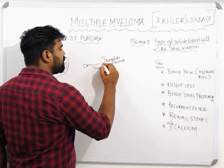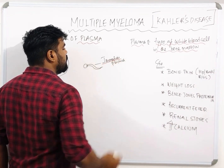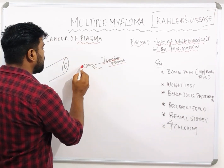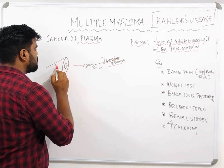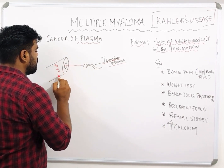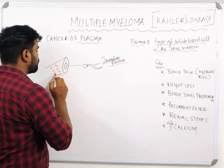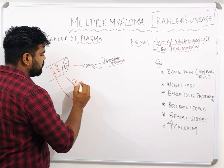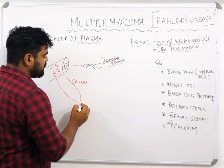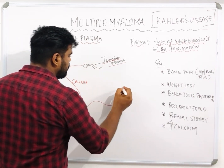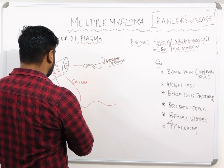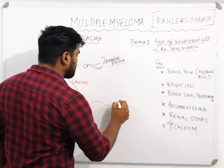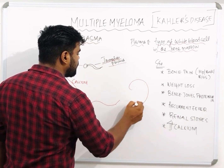As with any cancer, the cells will be immature. Here also we can see immature plasma, which will invade into the bone and will destruct the bone. The bone will be degenerated or destructed. From the destructed bone, there will be excessive calcium released into the bloodstream, and there will be excessive release of uric acid also.